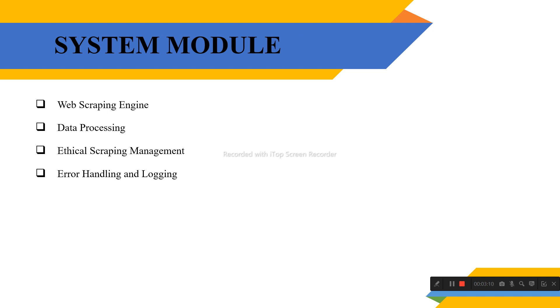There are four modules used in this system: Web Scraping Engine, Data Processing, Ethical Scraping Management, and Error Handling and Logging.